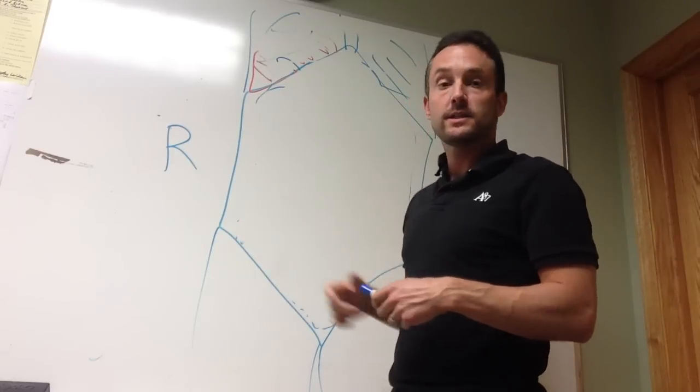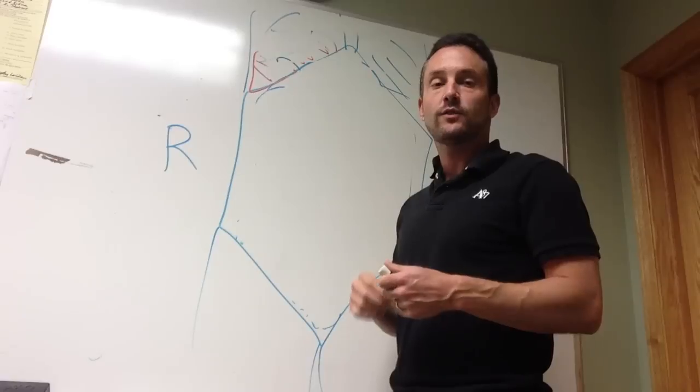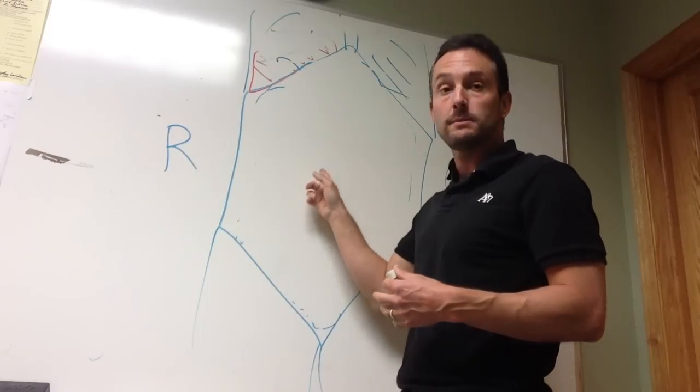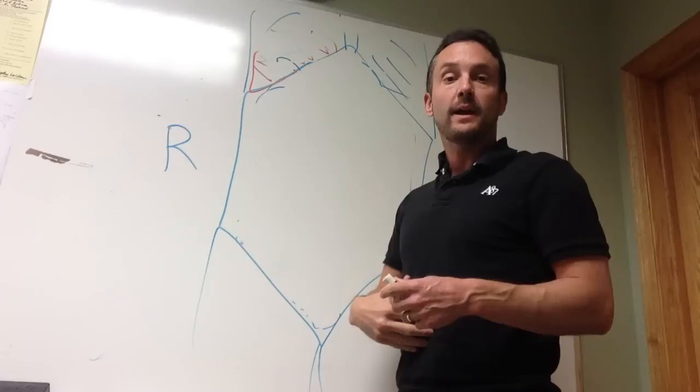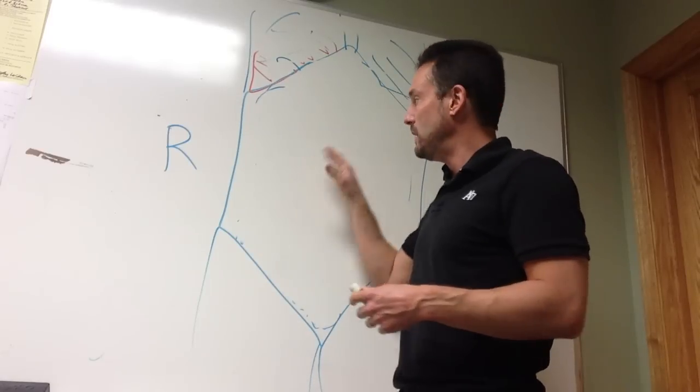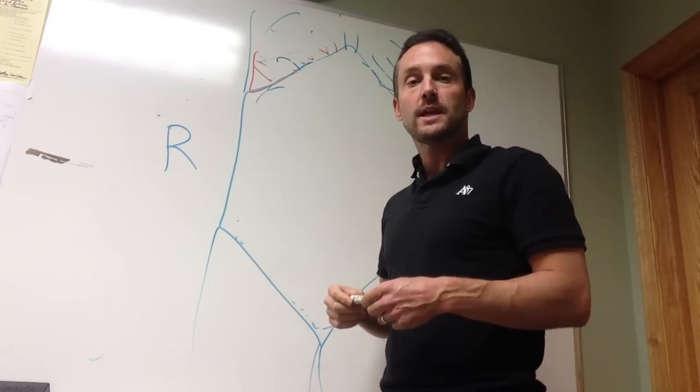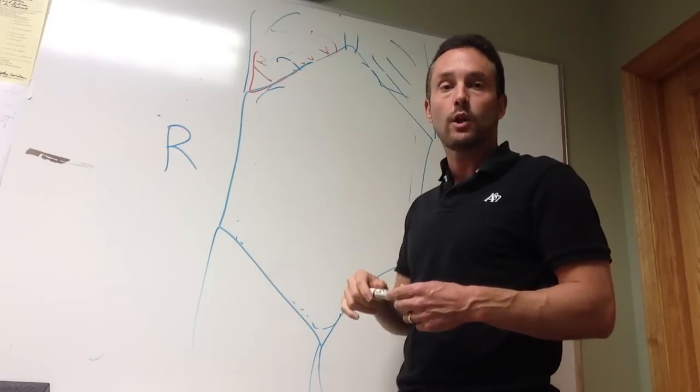Your appendix or appendicitis is going to be down in your right lower quadrant, oftentimes associated with fever, nausea, and vomiting. The interesting thing is in a kid, the kid will oftentimes point to his belly button as the first symptom of appendicitis, and we need to be careful that he's not telling me that his appendix is bothering him just a day early. So sometimes it starts in the belly button, but typically ends up in the right lower quadrant.